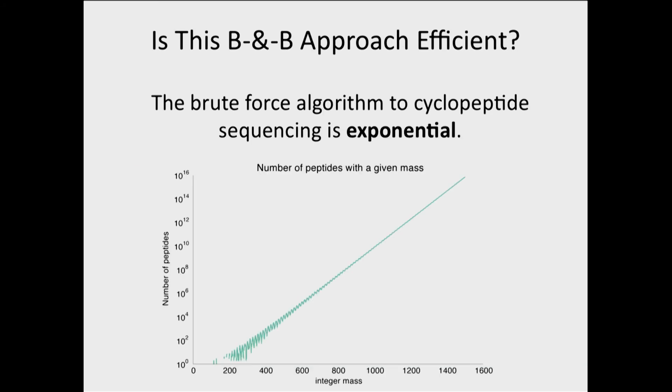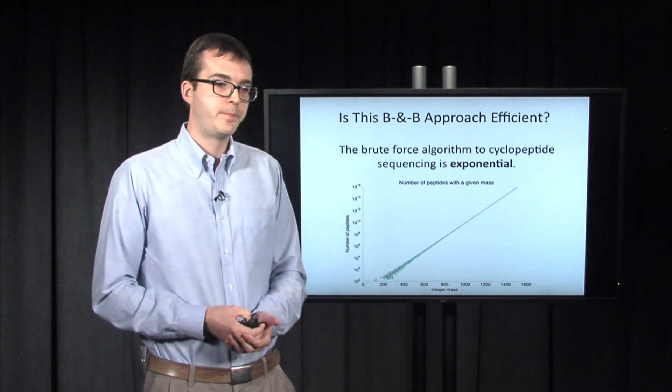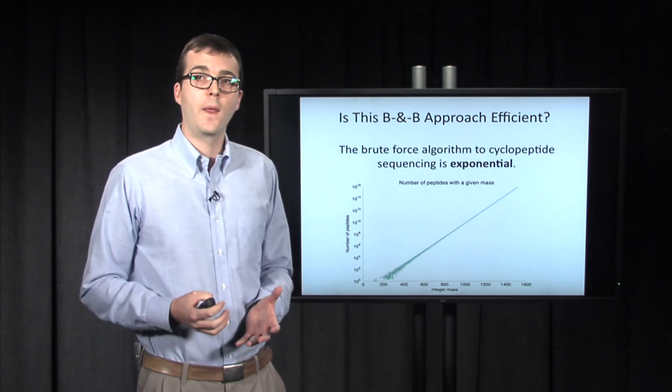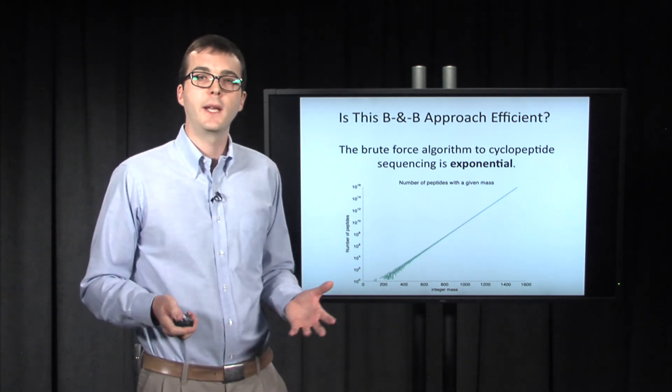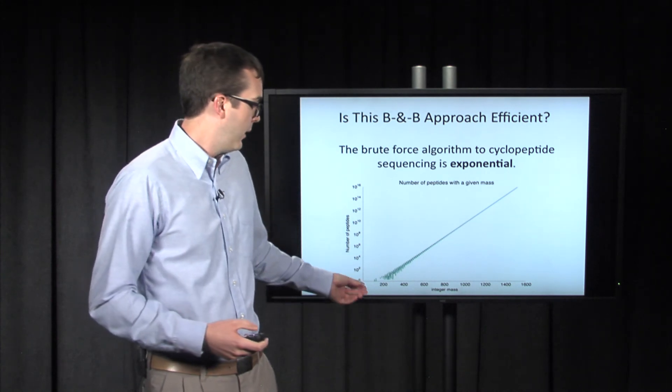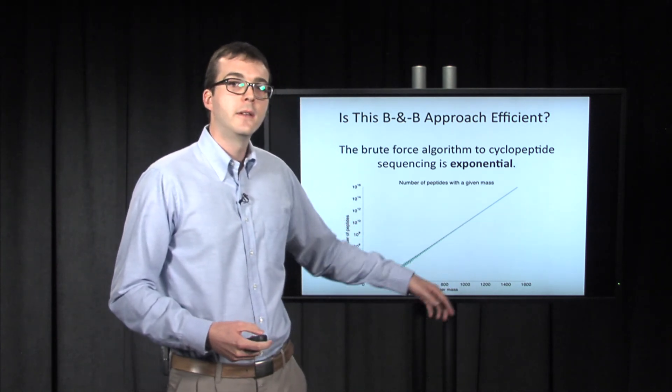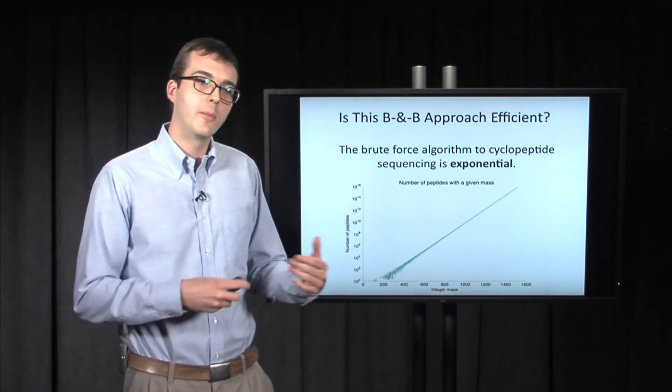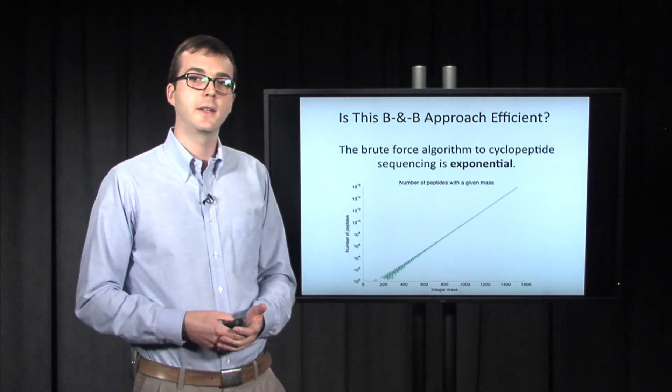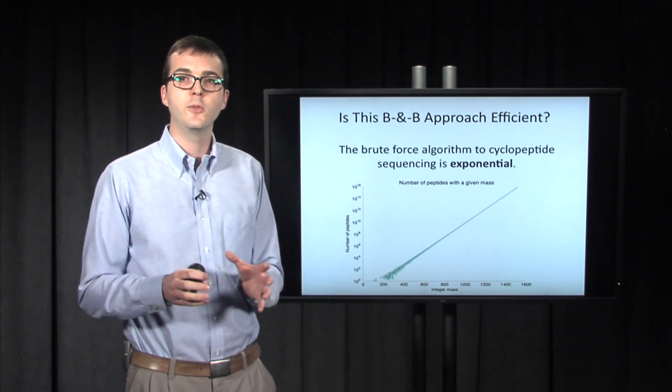So we've seen it works really well on an example, but we ask ourselves whether or not this algorithm is efficient in practice. So the brute force algorithm that we saw before, it was exponential. And by exponential, I mean if you look at its input size, the number of steps that it has to take, or in this case the number of peptides that it has to consider, grows exponentially with respect to the input size.